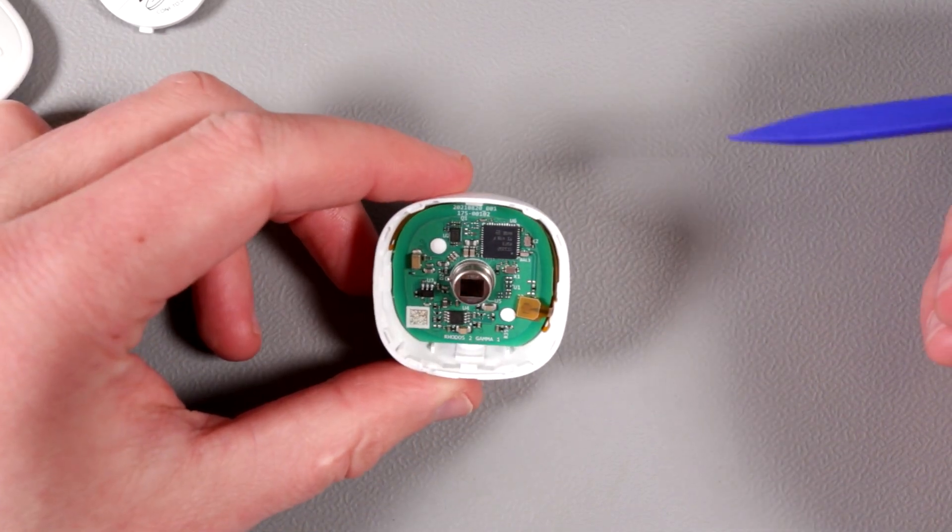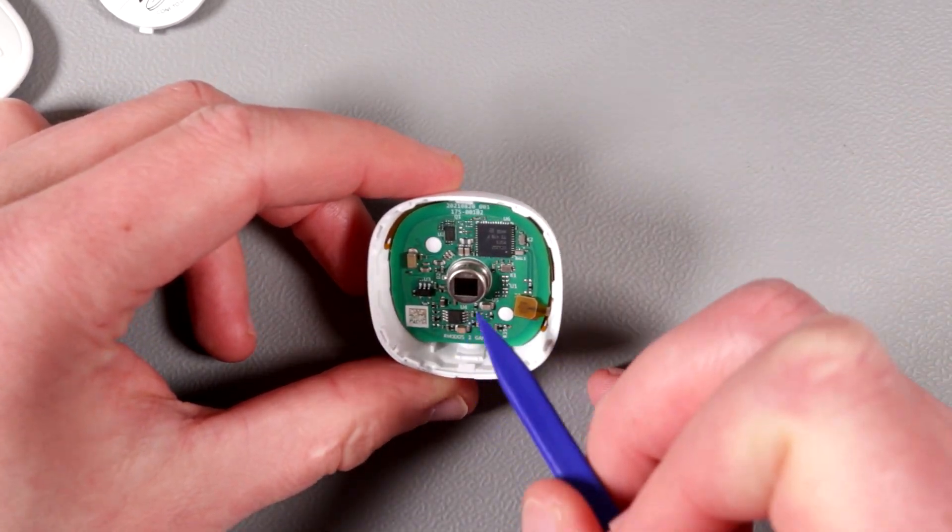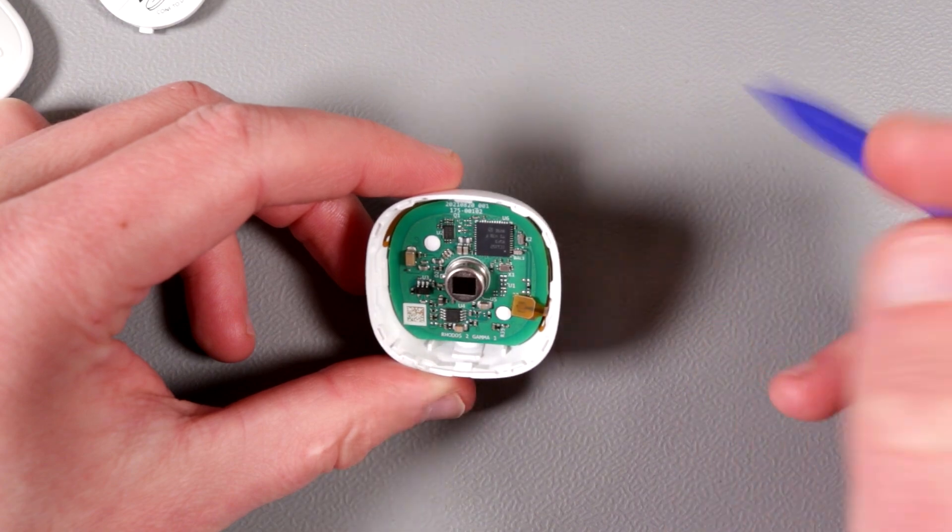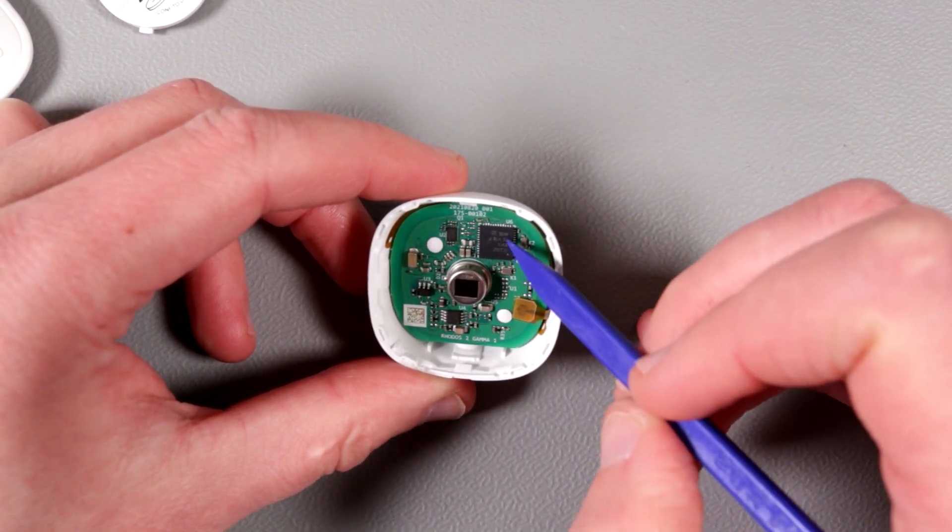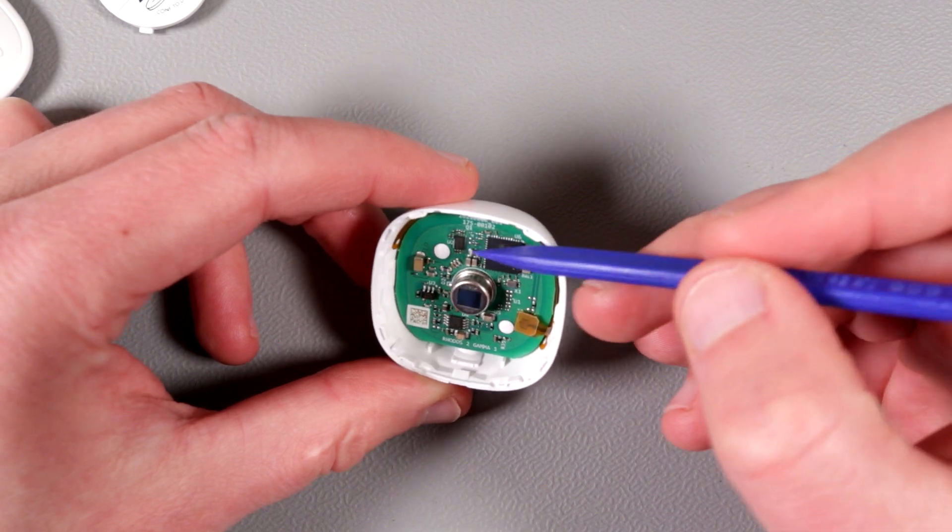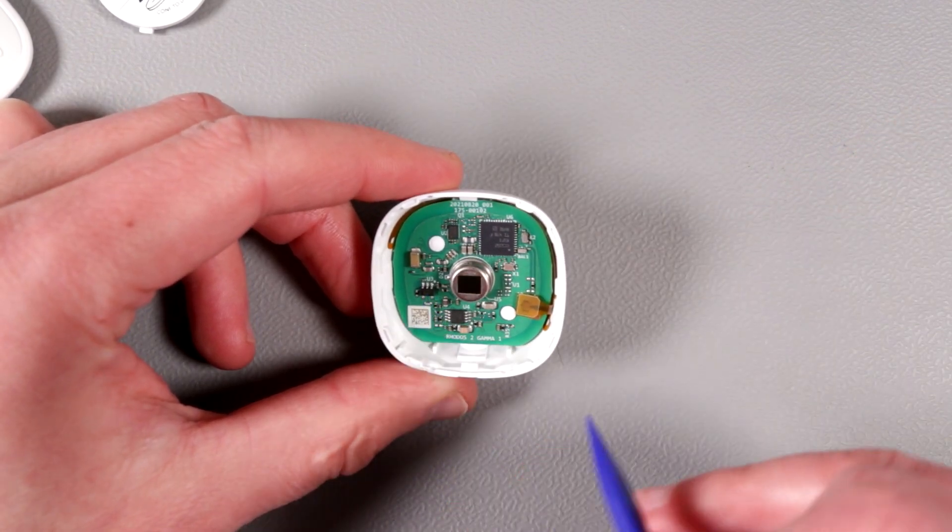Looks like I bent it out of alignment. I'll fix that. Okay cool. What do we have here? So first of all, over here there's a big and nice PIR sensor.